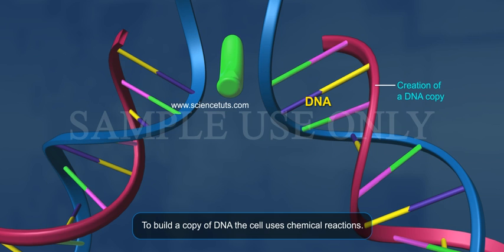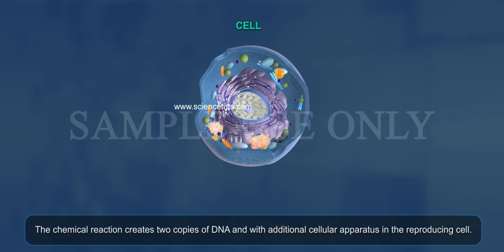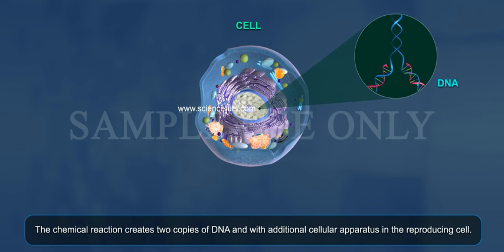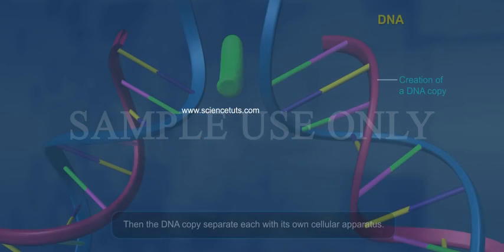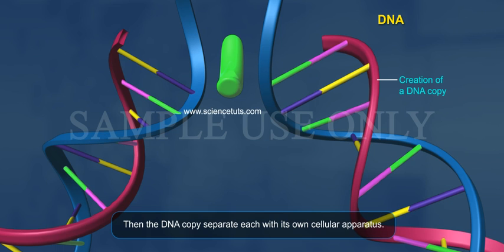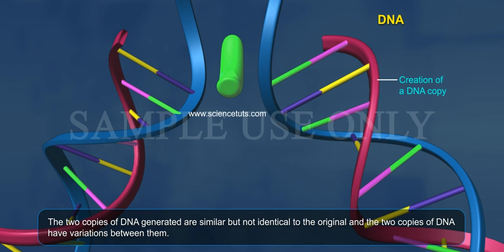So the basic event in reproduction is the creation of a DNA copy. To build a copy of DNA, the cell uses chemical reactions. The chemical reactions create two copies of DNA with additional cellular apparatus in the reproducing cell. Then the DNA copies separate, each with its own cellular apparatus.